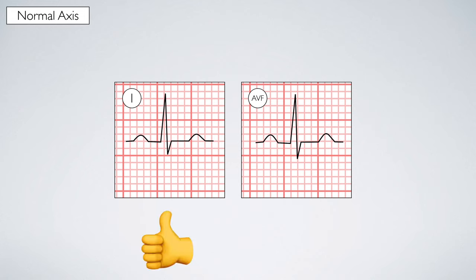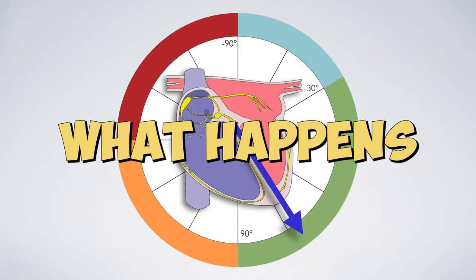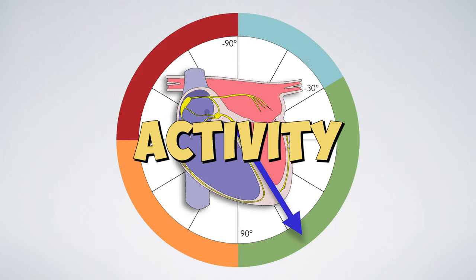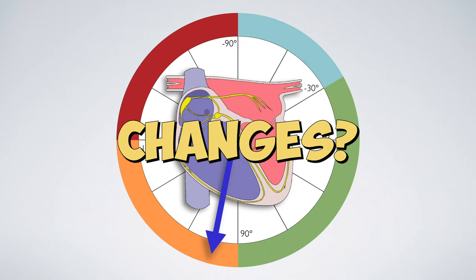This is like a double thumbs up from the heart, telling us that everything is okay. But what happens when the main vector of electrical activity changes?